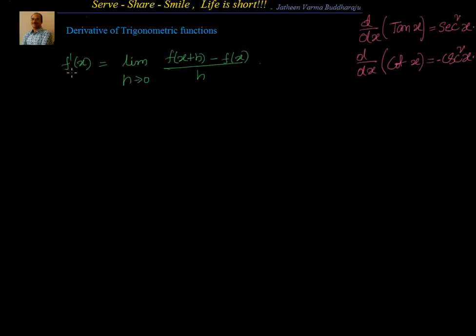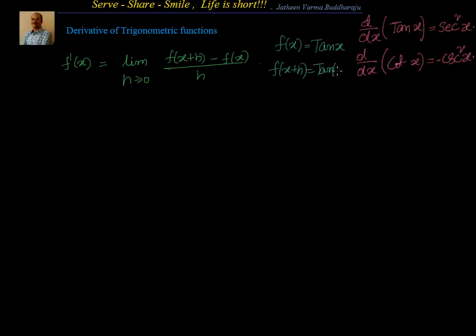We know the formula: f'(x) = limit as h tends to 0 of [f(x+h) - f(x)] / h. So now let us see what our f(x) is. f(x) is equal to tan x, and f(x+h) is equal to tan(x+h). So let us substitute in the formula.